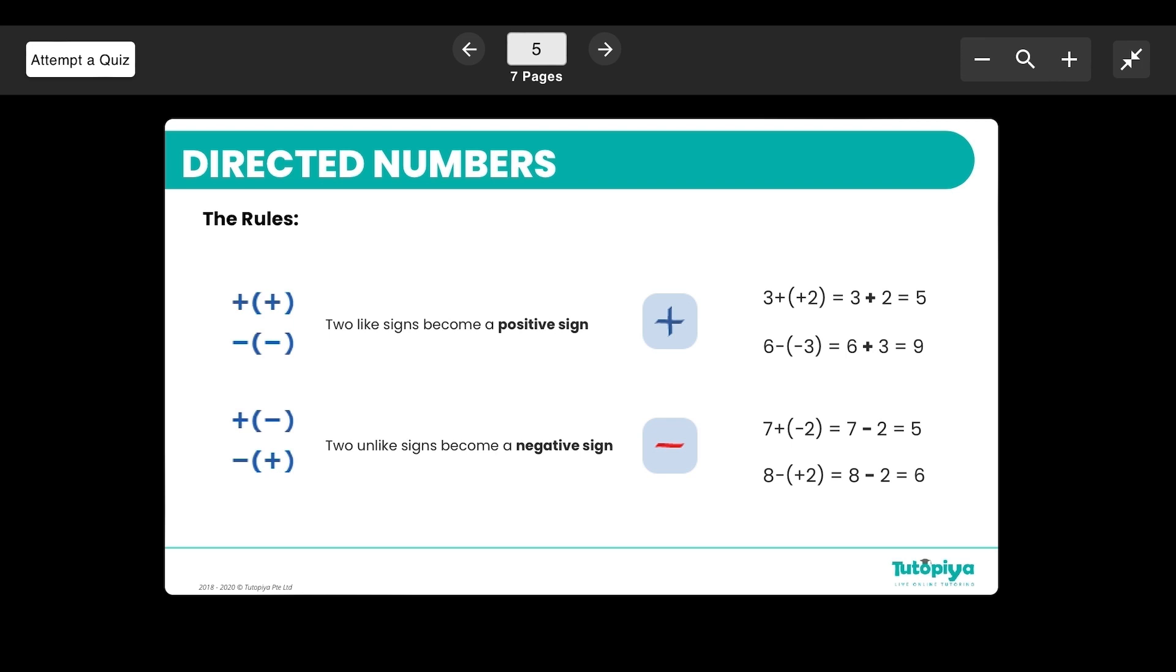Moving on, what are the rules of directed numbers? You need to know the rules about adding and subtracting. When you add two positive numbers it becomes positive. When you subtract a negative number it turns into a positive number.